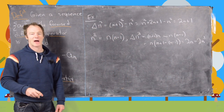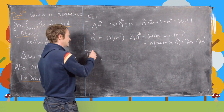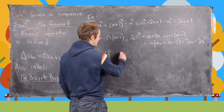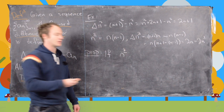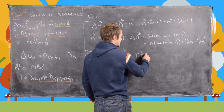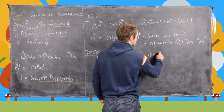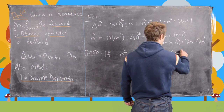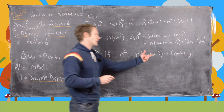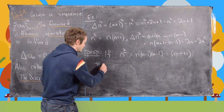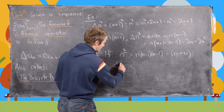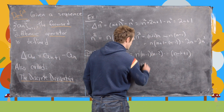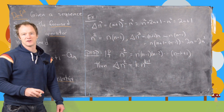So we have something like a power rule for falling powers. The general proposition is: if n to the kth falling power equals n·(n-1)·(n-2)·…·(n-k+1) — k total terms — then the forward difference operator of n to the kth falling power equals k times n to the (k-1)th falling power.